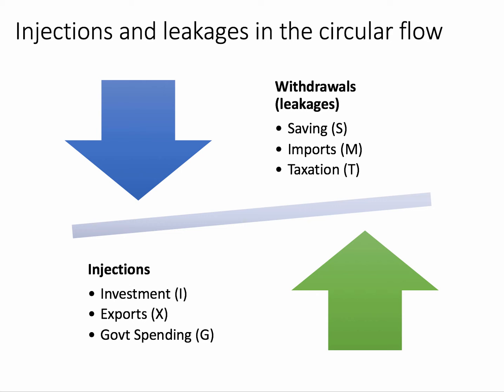If one thinks about the basic circular flow between consumers and businesses, there are three ways that money leaves the circular flow — they're called leakages and withdrawals: savings, imports, and tax. And three additional injections of aggregate demand other than consumption: investment spending, exports of goods and services, and government spending.